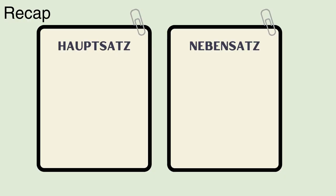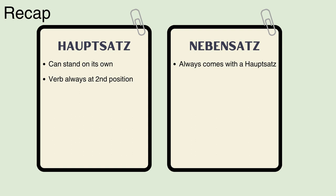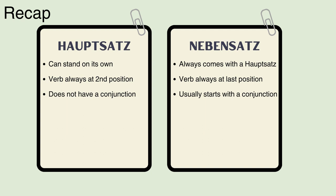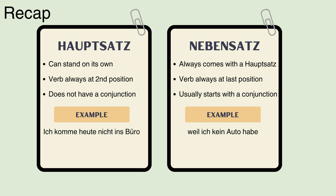A Hauptsatz is a sentence which can stand on its own. A Nebensatz always needs a Hauptsatz and cannot stand on its own. In a Hauptsatz the verb always comes at the second position; in a Nebensatz the verb goes to the last position. A Hauptsatz does not contain a conjunction, whereas a Nebensatz usually starts with one. Example of Hauptsatz: 'Ich komme heute nicht ins Büro.' Example of Nebensatz: 'Weil ich kein Auto habe.' Together they make: 'Ich komme heute nicht ins Büro, weil ich kein Auto habe.'